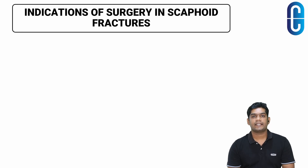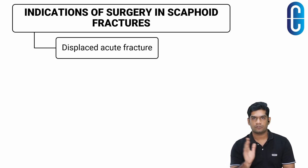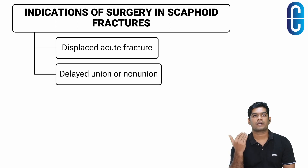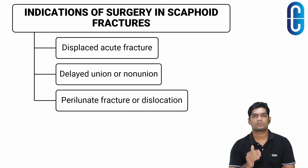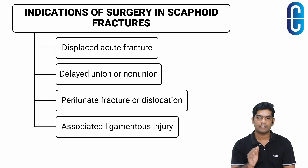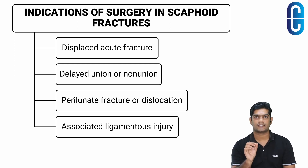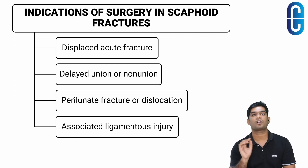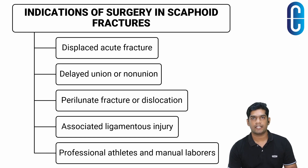Indications for surgery in scaphoid fractures include displaced acute fracture, delayed union or non-union when bone grafting is required, scaphoid fractures associated with perilunate fracture or dislocation, and fractures associated with ligamentous injury. Even non-displaced fractures may be surgically treated if the patient will not tolerate prolonged cast immobilization, for example professional athletes and manual laborers.